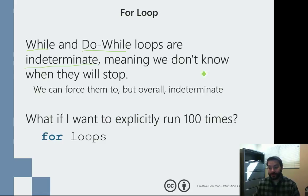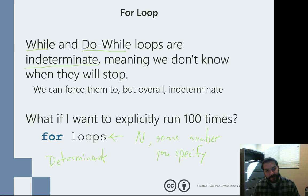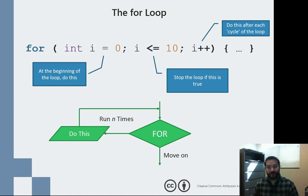A for loop, on the other hand, a for loop is going to run explicitly n times, n being some number you specify. And it is considered determinate. Because again, it runs explicitly how long you tell it to run.